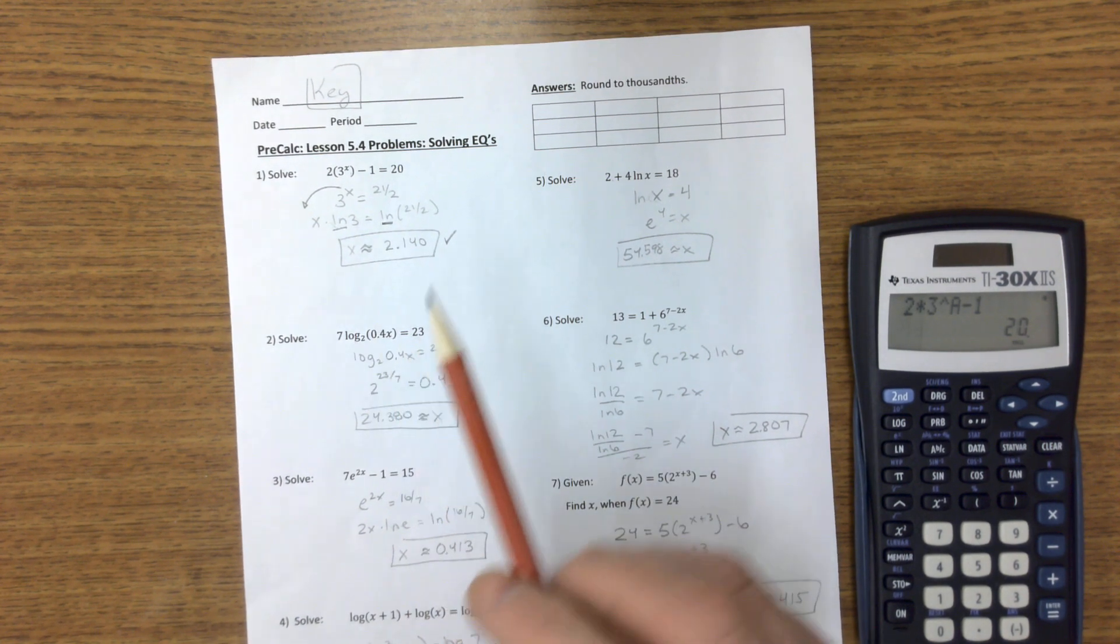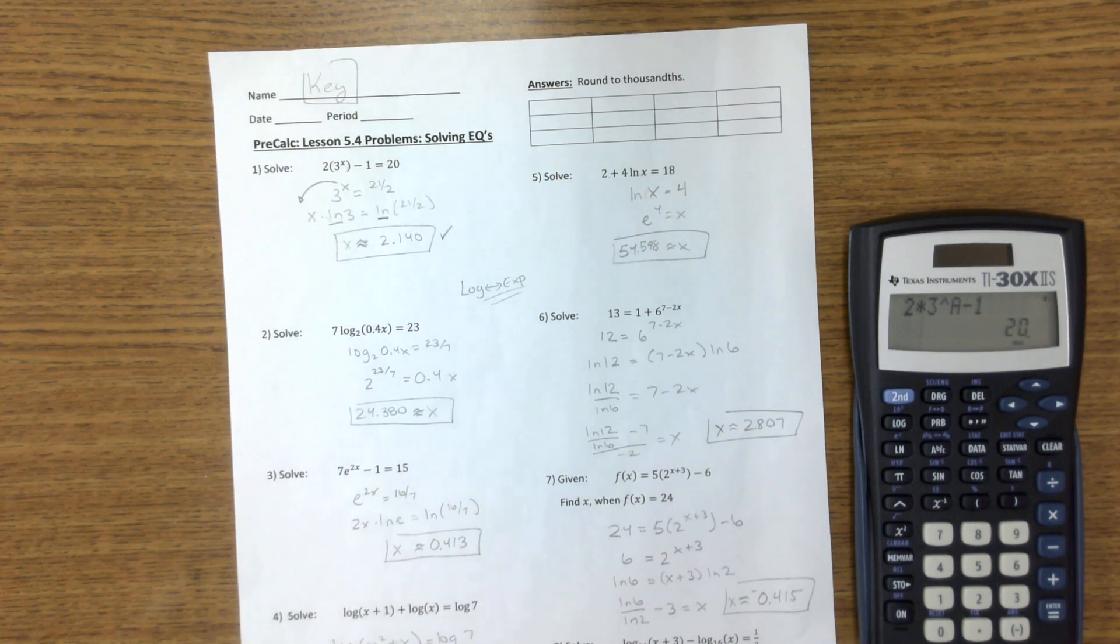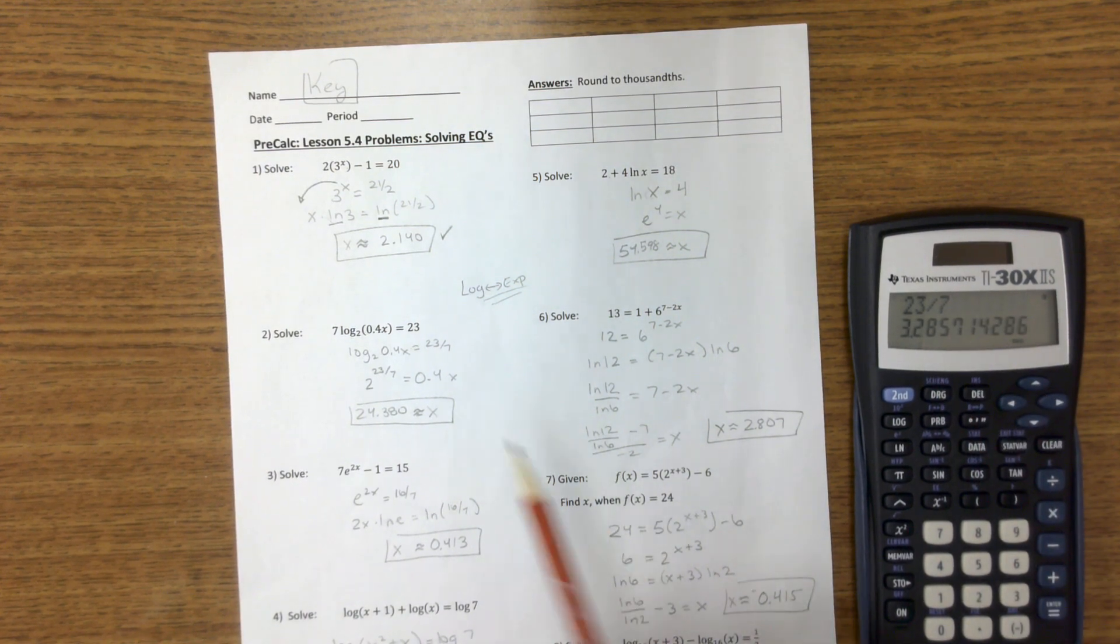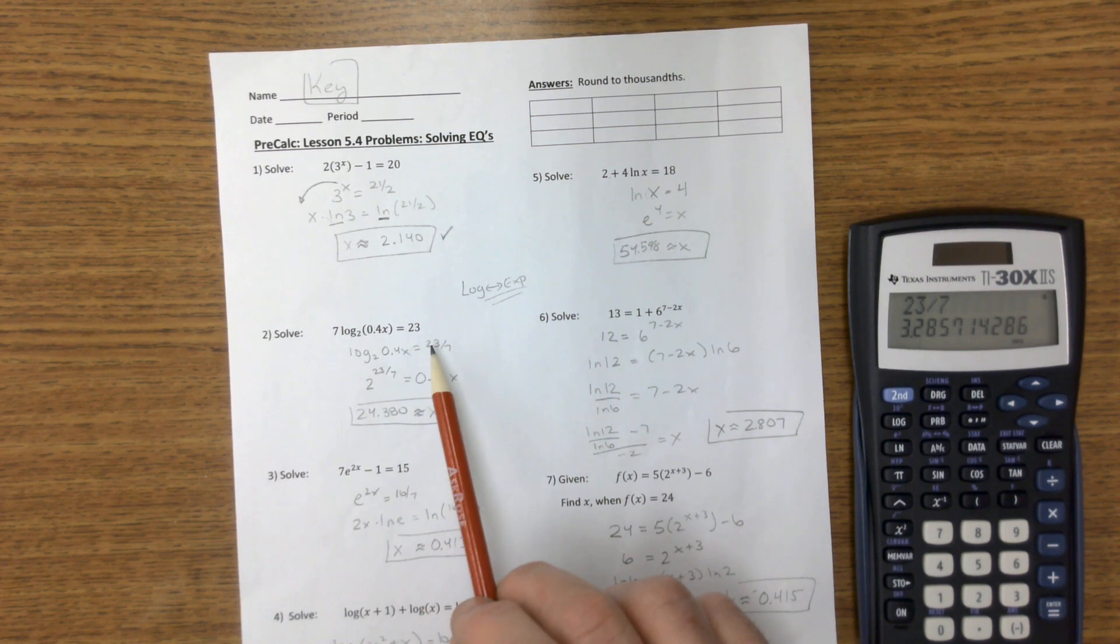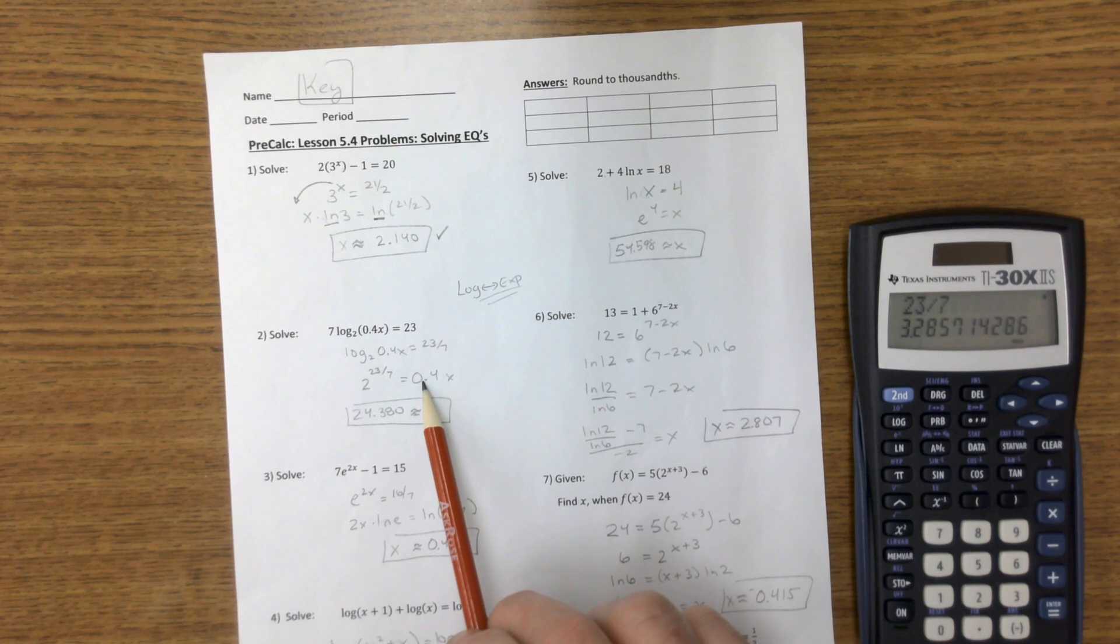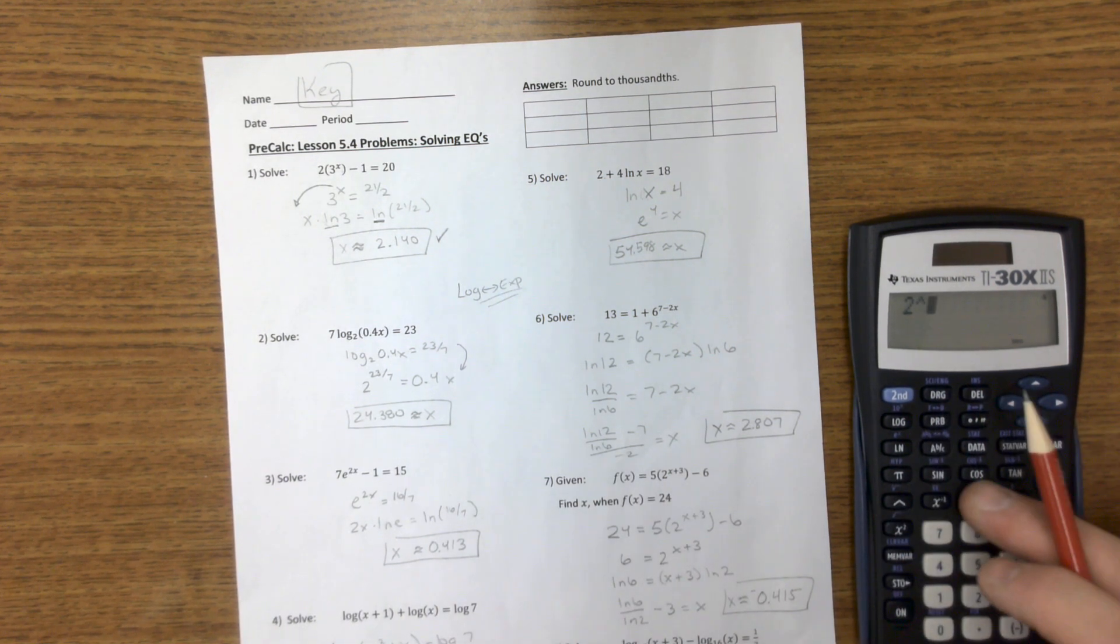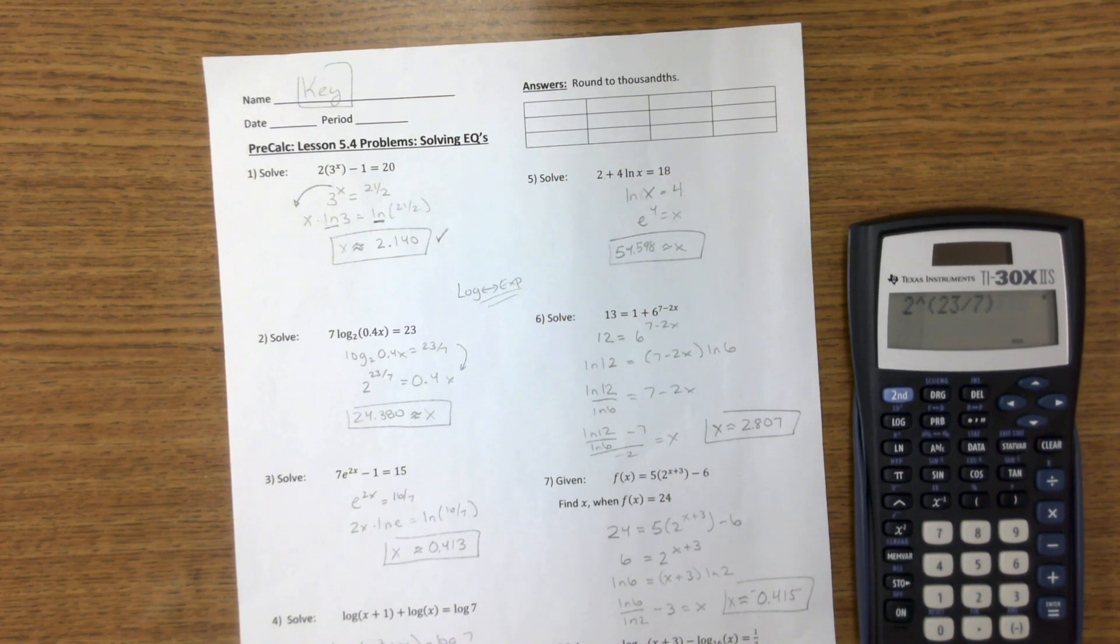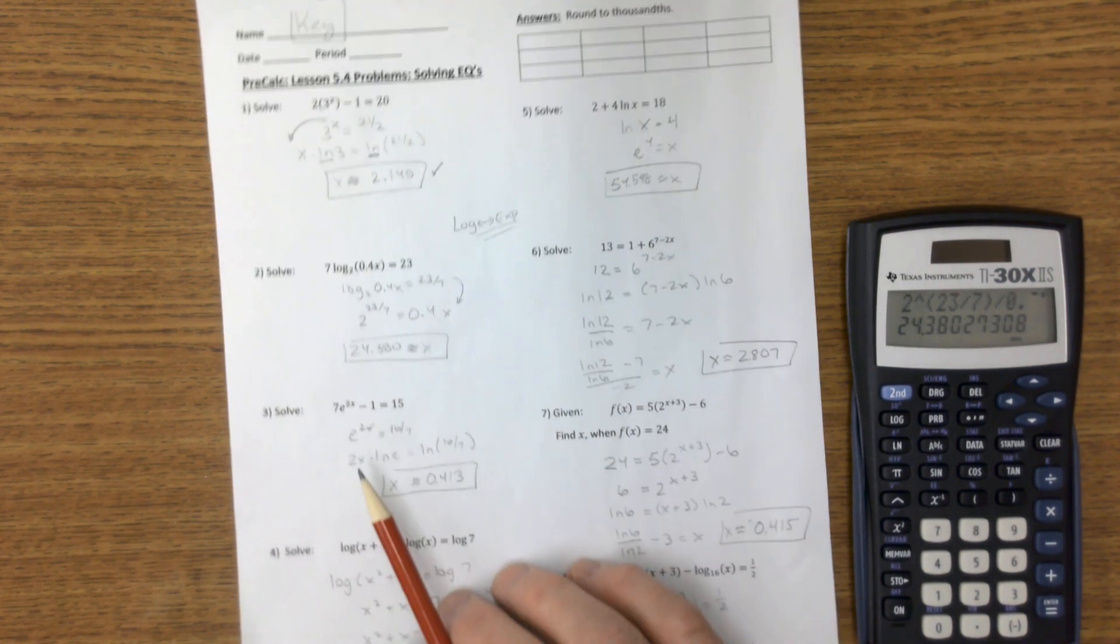Next problem. It is a log problem, so we're going to change it from the world of logs to the world of exponents. That's what you're doing in this paper, going back and forth between the two. So I divide it over the 7. 23 divided by 7 is definitely this crazy number, but I'm not going to use that. I'm going to keep that in my calculator. And now I have the log base 2 here, so this is 2 to this power gives that result. Just changed it from the world of logs to the world of exponents, and now I can do that problem. 2 raised to the 23 out of 7 power divided by 0.4. Make sure you're using parentheses everywhere you go. And you can store it in your calculator.